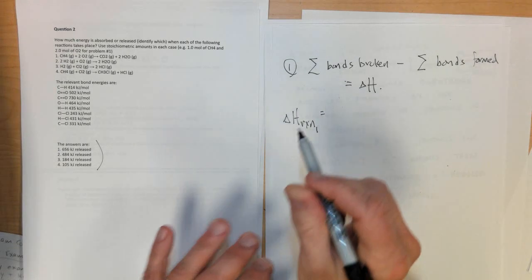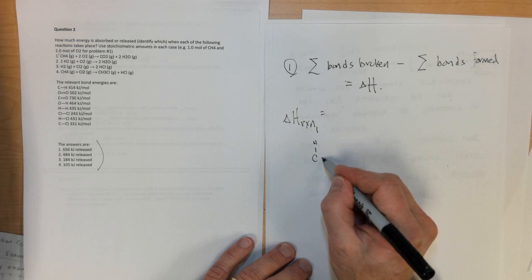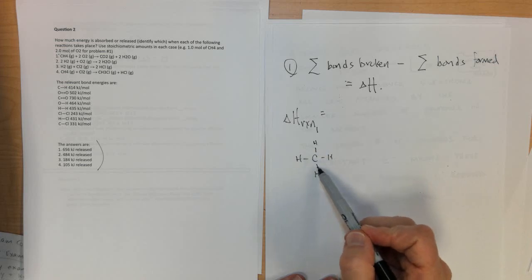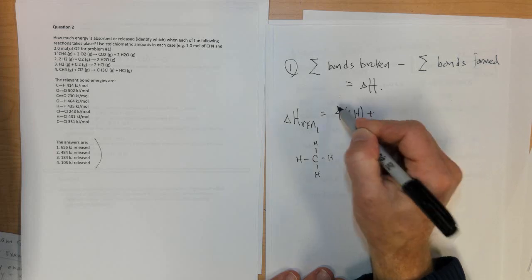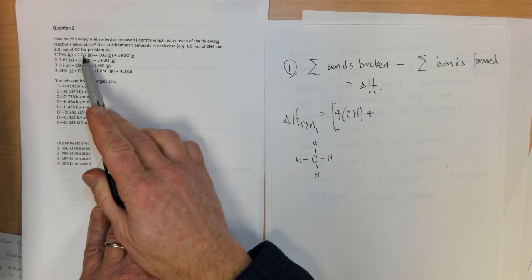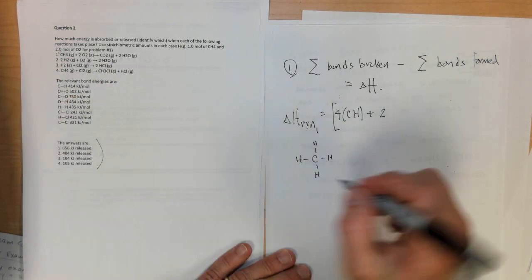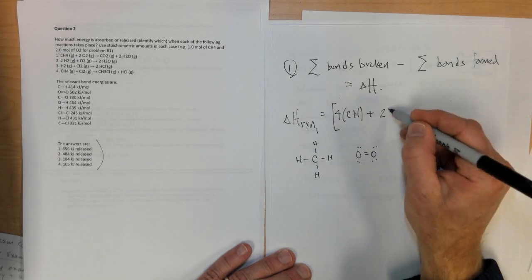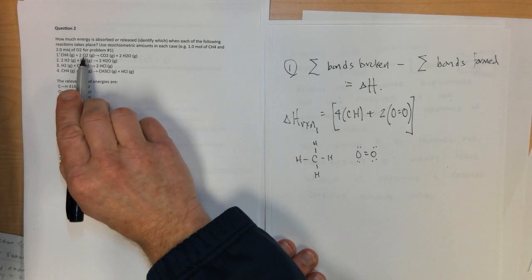And so the delta H for the reaction for the first one would be equal to the broken bonds in CH4. CH4 looks like this and you usually have to sketch the Lewis electron dot structure and would contain one, two, three, four CH bonds. So it would be four times CH bond. Plus the other bond that's broken is the O2 bond, two of them by the way, because there's a two in front of here. And then oxygen is a double bonded species. So it would be two times an oxygen oxygen double bond. And these would be my bonds that are broken on the left side.